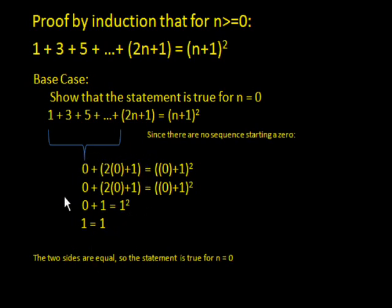Now if you look at the right side, you get n plus 1 squared, which would be 0 plus 1 squared, which is 1 squared, which is 1. As you can see, 1 is equal to 1, therefore, this statement is true for n is equal to 0.